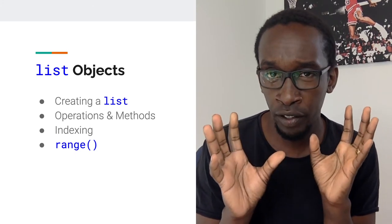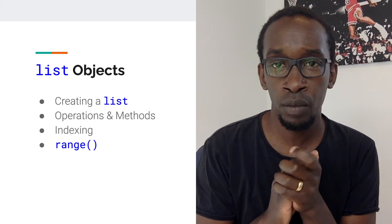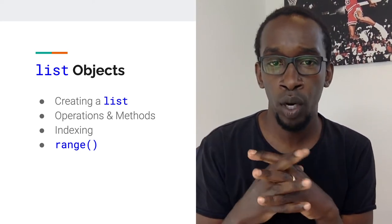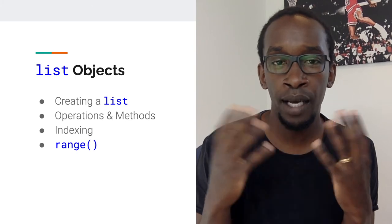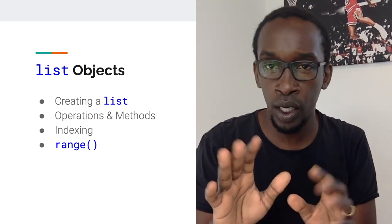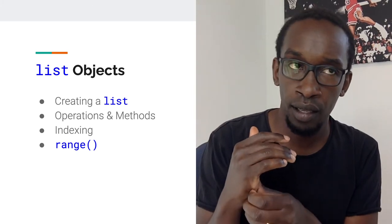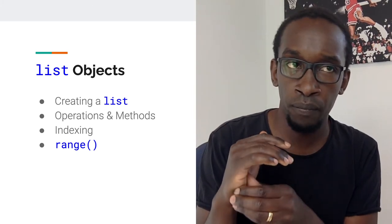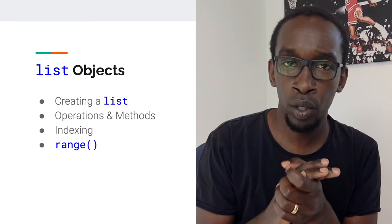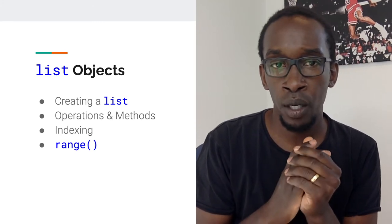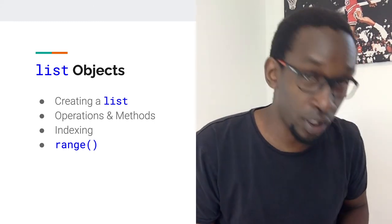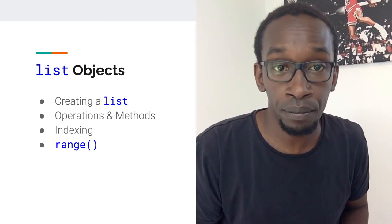To work with lists we need to know several things: how to create a list, how to perform operations on lists, which methods are available, and how to access members using indexing. Python also has a special function called range which generates what are called generators that can be converted into lists. We'll look at for and while loops in a future week, but for today we start with the list object.